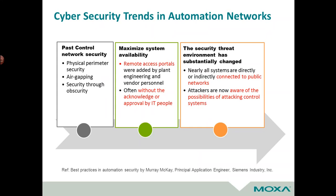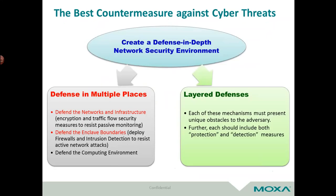One of the other things we're starting to see a lot more of in the industrial space is cybersecurity. When you're talking about maintaining a network, that includes protecting it against outside intrusions or attacks. Hackers have realized that taking out a power plant or a large factory is a very appealing target, so we're seeing the need more and more in the industrial space for security inside networks. There is a two-pronged approach to making sure you have a secure network. The first is to put defenses in multiple places — you can defend your networks and infrastructure by encrypting the traffic that goes through your network. Then you also have your enclave boundaries — the edge devices before the network goes out to the outside world — things like firewalls and intrusion detection systems to keep hackers out.